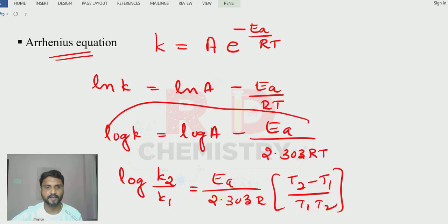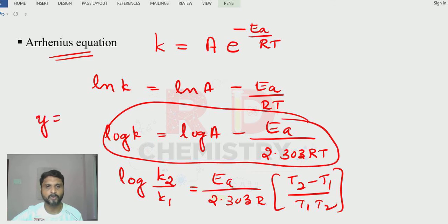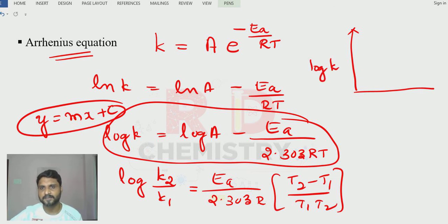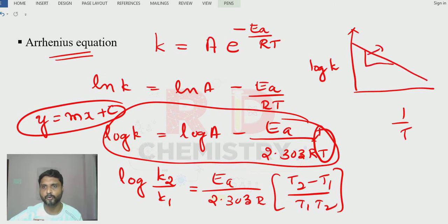The log K equation takes the form Y = mx + c, a straight line with negative slope. If we plot log K on the Y-axis versus 1/T on the X-axis, we get a straight line with a negative slope equal to −Ea / (2.303R). This is the graphical interpretation of the Arrhenius equation.